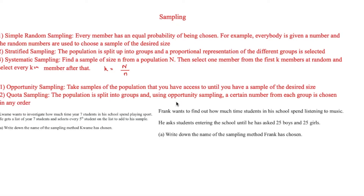There are five different sampling methods we'll go through today. The first is simple random sampling, where every member has an equal probability of being chosen. For example, everybody is given a number and then random numbers are used to choose a sample of the desired size — you could use a random number generator to pick each person completely at random.